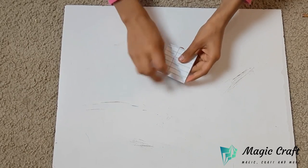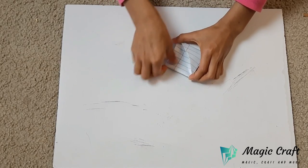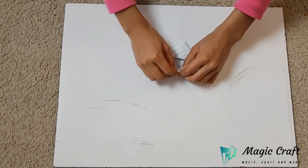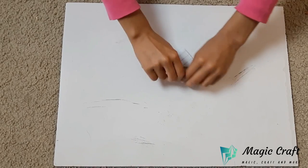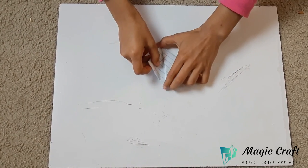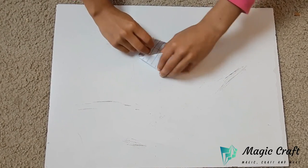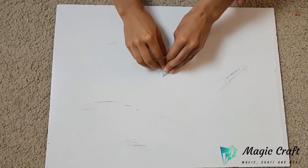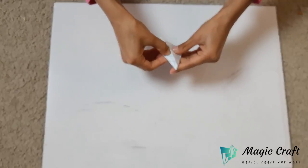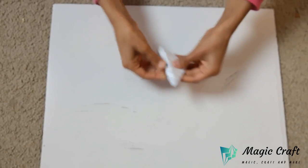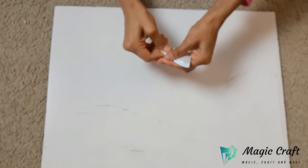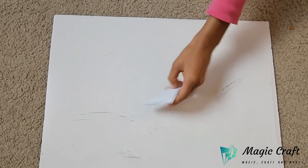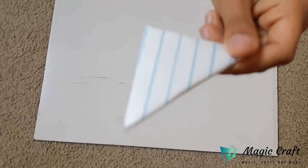Then open it back up and fold the triangle into the pocket. Now you can flatten it to crease it.